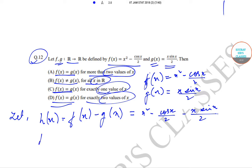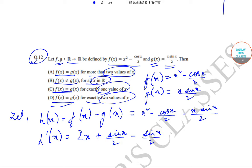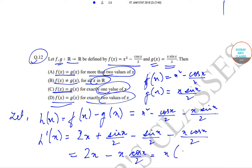Now we differentiate h(x). So h'(x) gives us 2x minus sin(x/2) minus sin(x/2) minus x·cos(x/2), which ultimately simplifies to 2x - x·cos(x/2). Taking x common, this gives us x·(2 - cos(x/2)).